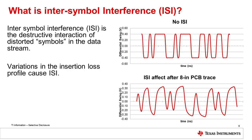Inter-symbol interference is the destructive interaction of distorted symbols in the data stream as they propagate through the transmission media. ISI is caused by the variation in the insertion loss profile of the transmission media. All high speed data is made up of different combinations of bits or symbols. These symbols can have a different combination of ones and zeros and, if investigated separately, have their own unique frequency content. Each symbol may not be affected by the transmission media in the same way. This effect can cause edges — transitions from high to low or low to high — to affect one another. As an example, the top graph shows 10 gigabits per second 8B10B encoded data as measured directly at the transmitter output, and the bottom graph shows the impact of inter-symbol interference through an 8-inch PCB trace.